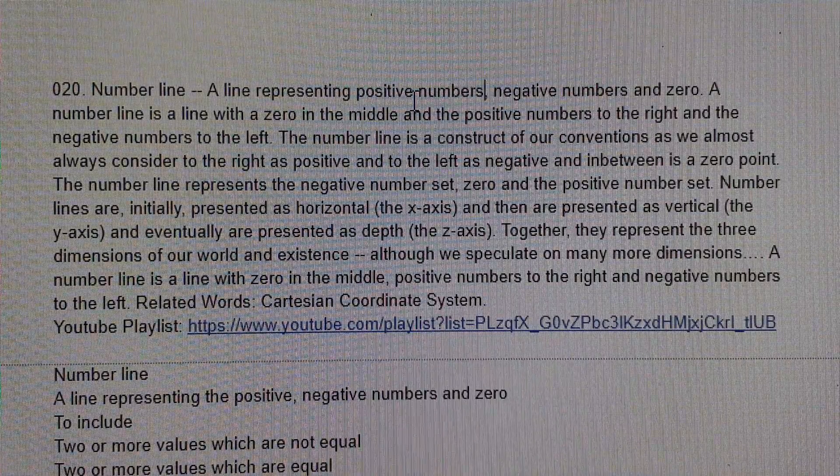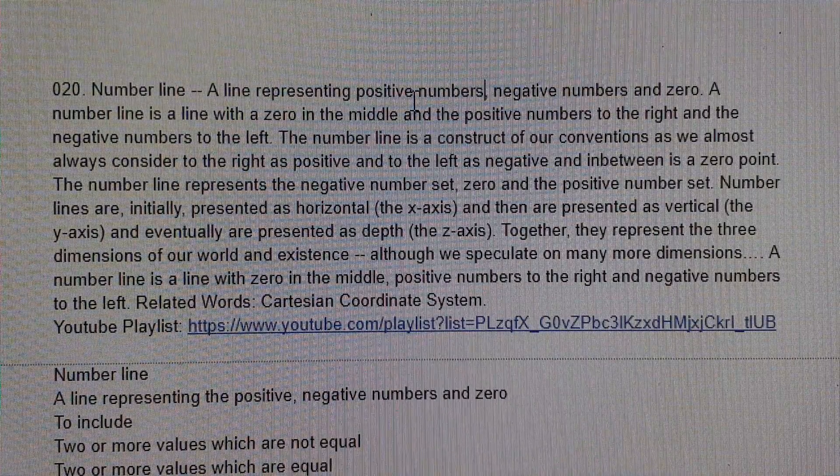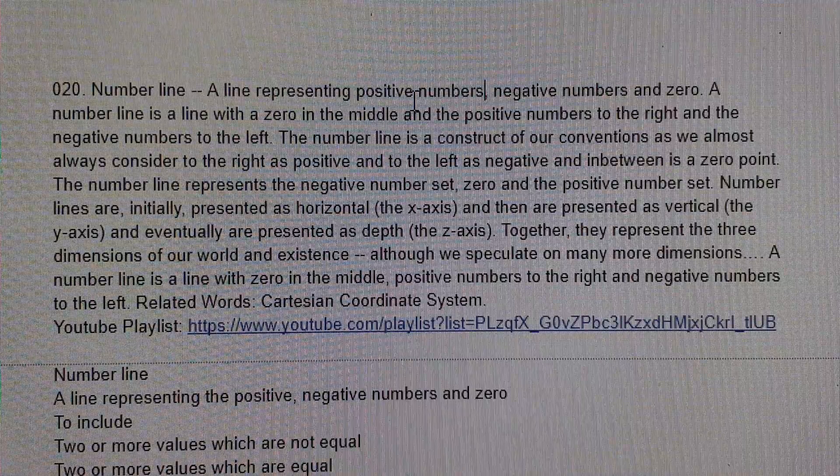In between is a zero point. The number line represents the negative number set, zero, and the positive number set.